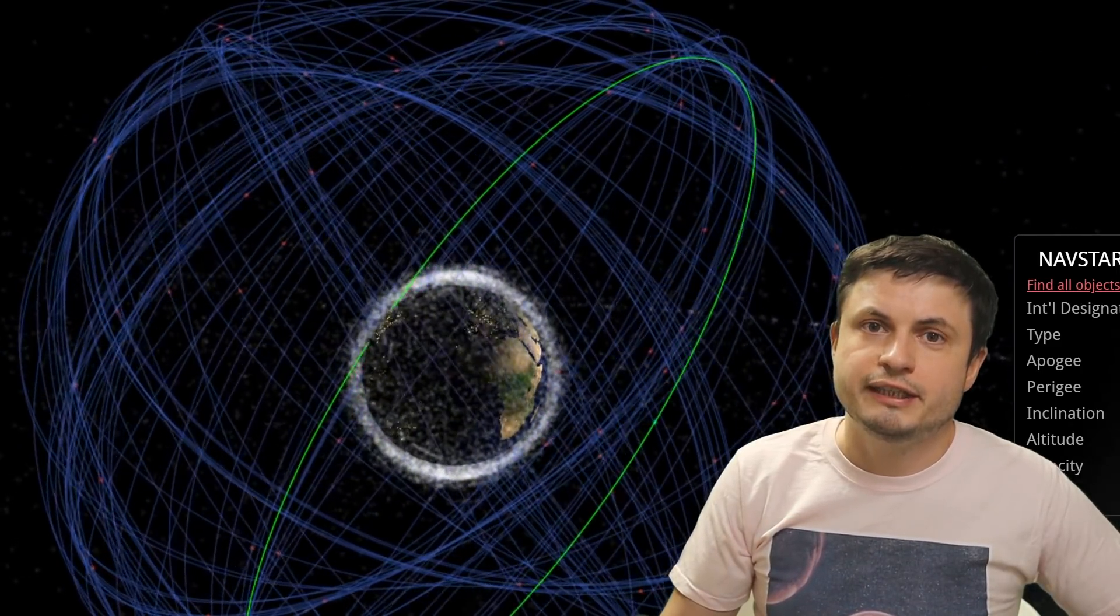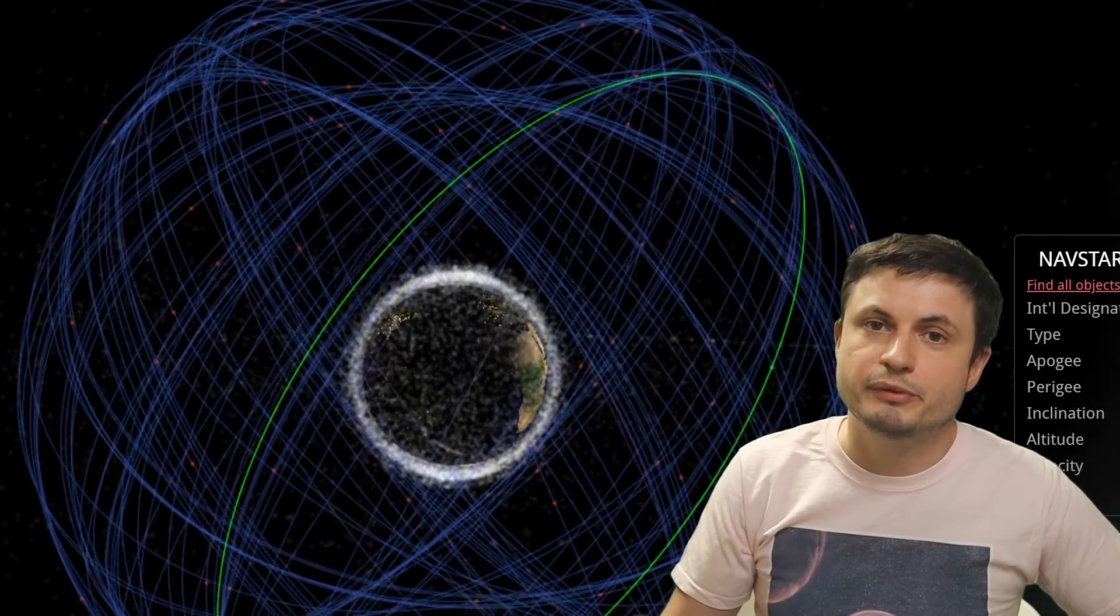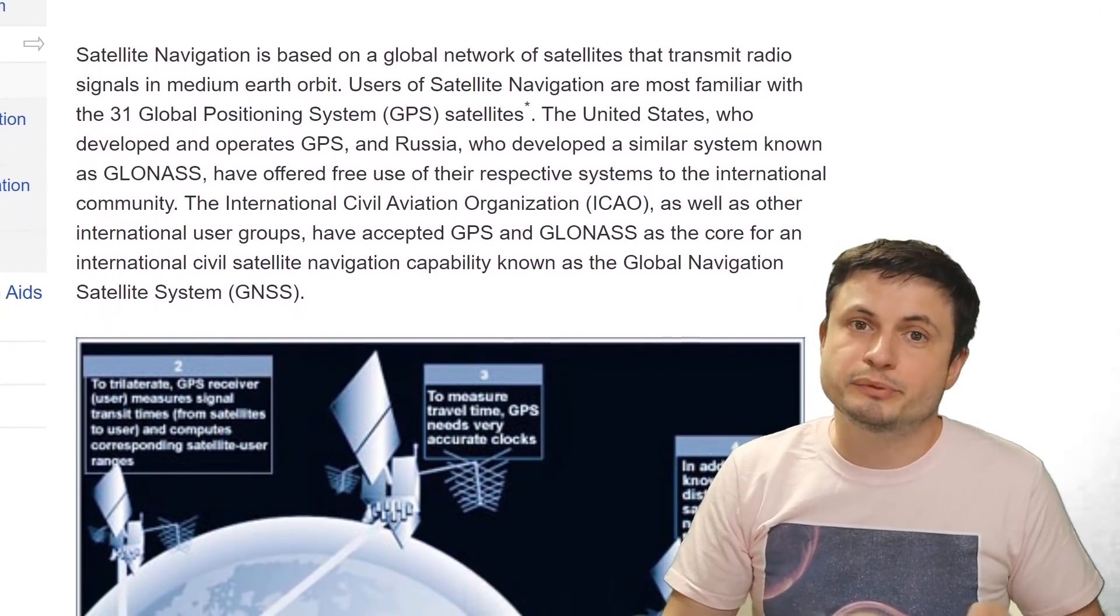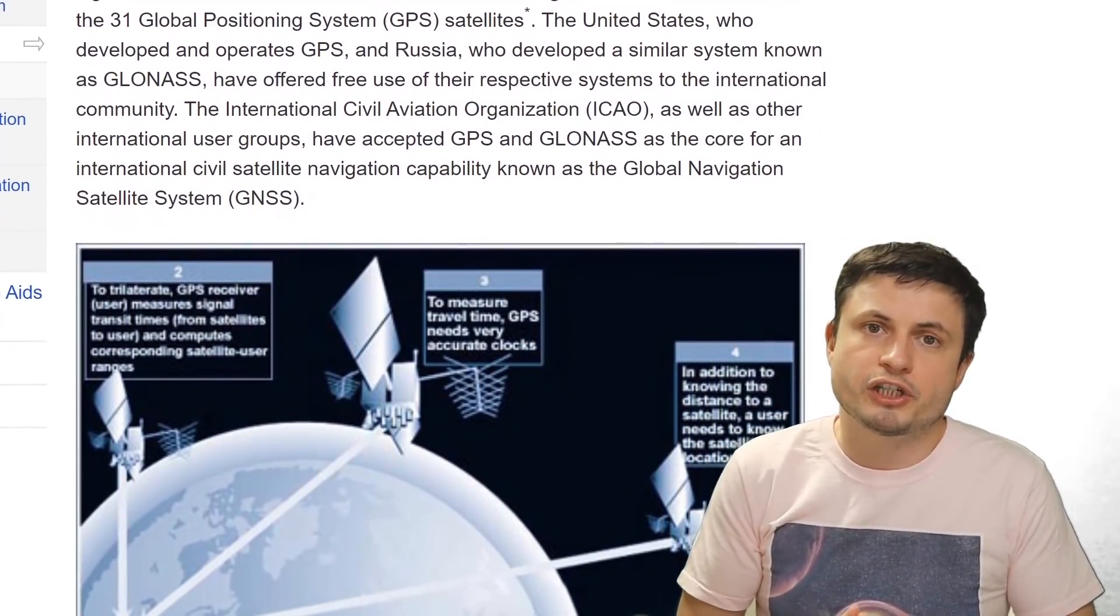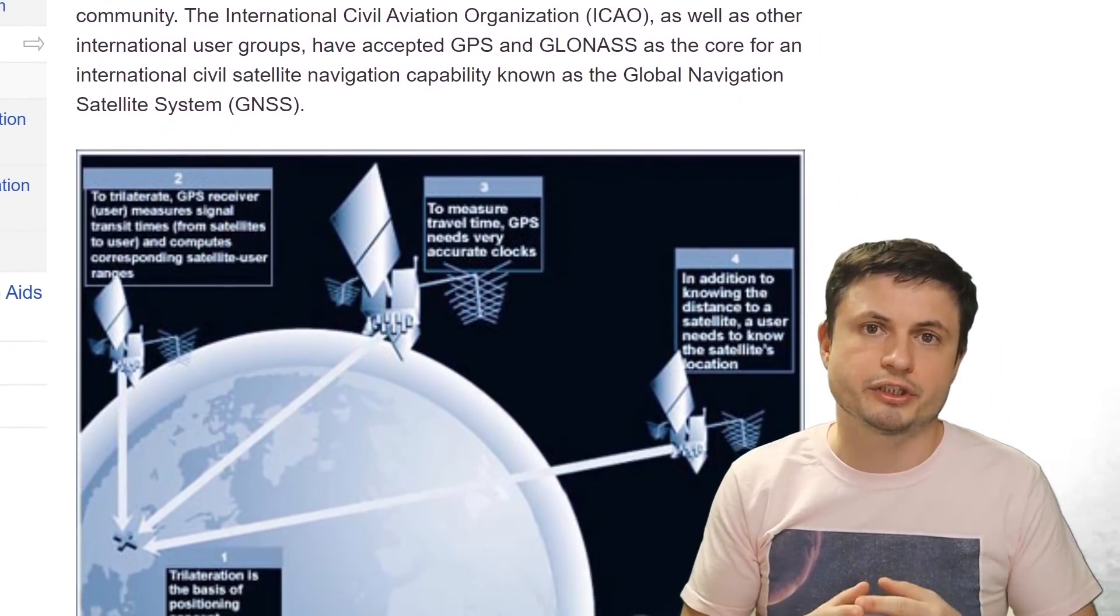But at the same time, each of these satellites also transmits the exact position in its orbit. Because in order for us to calculate where exactly we're located, we also have to know exactly where the satellite is located. And so by using the time and of course the location of the satellite, the receiver in your car or even inside your cell phone can then triangulate the exact position of you on planet earth. But there are a lot of different government websites that explain all of this in more detail if you actually want to know how all of this triangulation works.